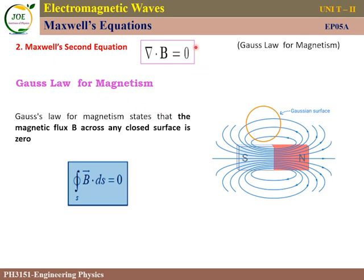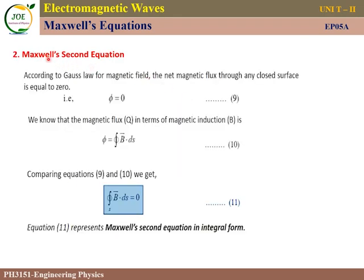As per the Gauss law for magnetic field, the net magnetic flux through any closed surface is equal to zero — that is phi equals zero. The magnetic flux is the number of magnetic lines per unit area. The surface integral of B dot dS equals zero. This is the Gauss law for magnetism, and it forms Maxwell's second equation in integral form.